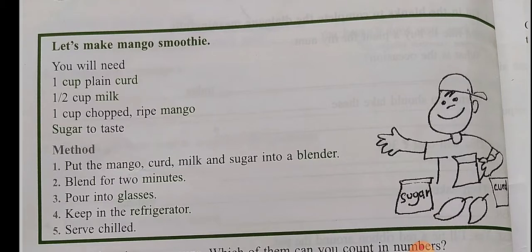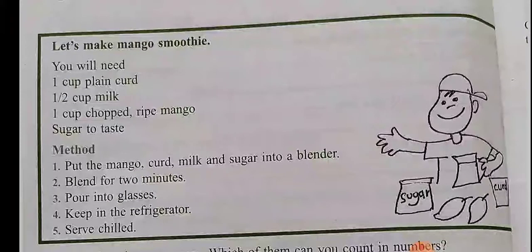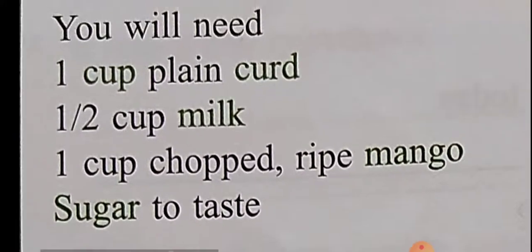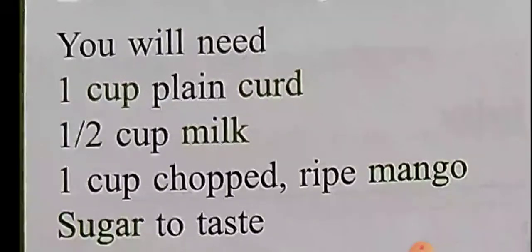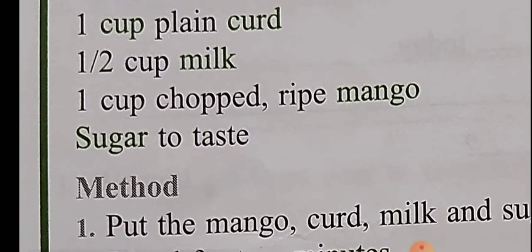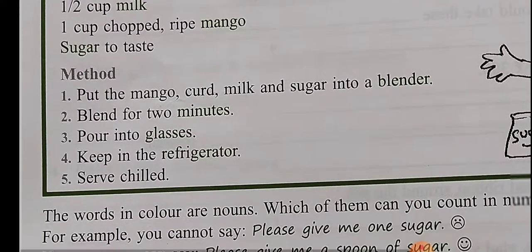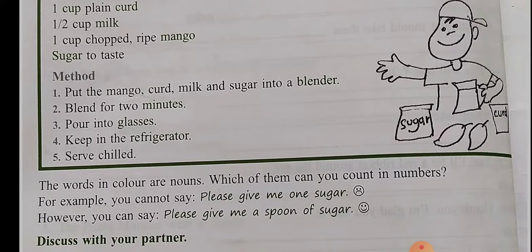Let's make a mango smoothie. So what you will need? You will need a cup plain curd. Here you have to observe the green indicated words. Cup and curd. 1.5 cup milk. 1 cup chopped ripe mango. Sugar to taste. Now method: put the mango, curd, milk and sugar into blender. Blend for 2 minutes. Pour into glasses. Keep in the refrigerator. Serve chilled. So these words in colour are nouns.